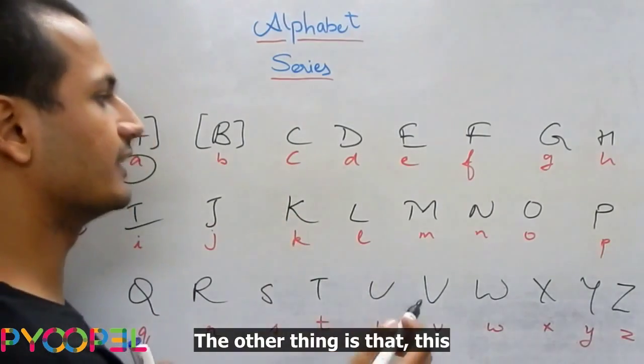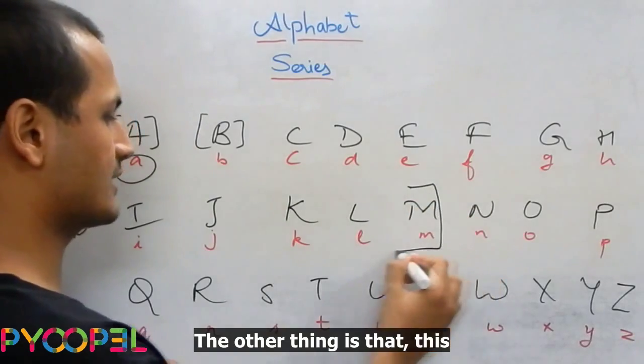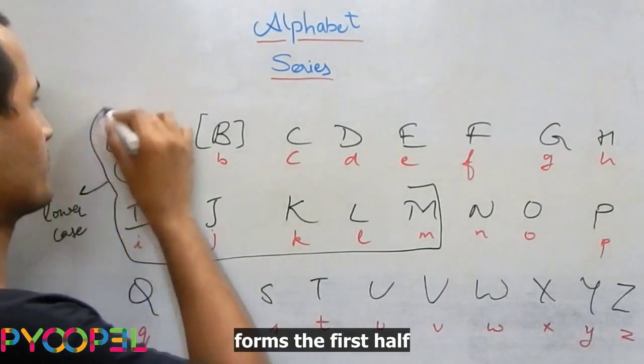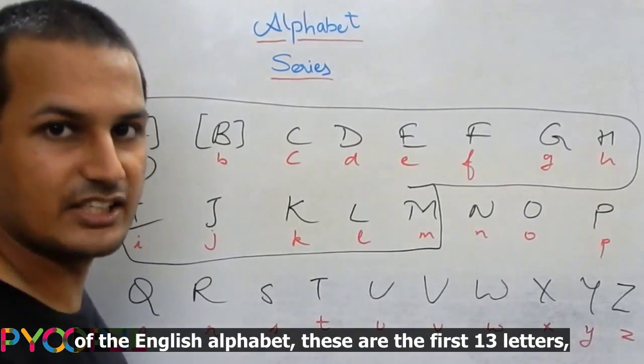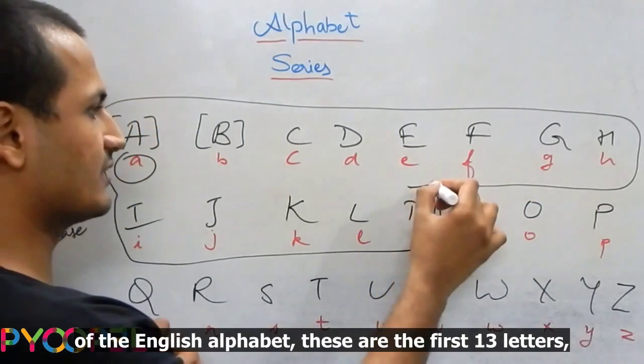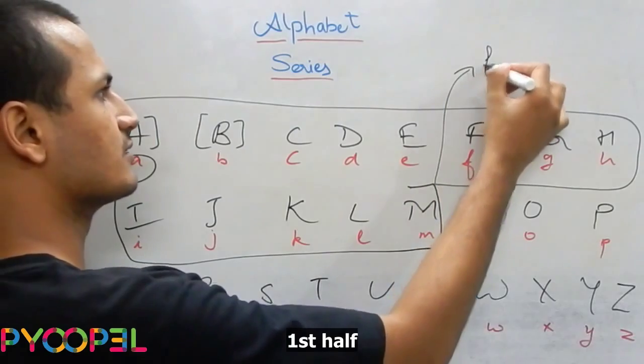The other thing is that this forms the first half of the English alphabet. These are the first 13 letters, first half.